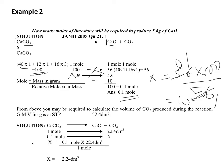Therefore, 0.1 mole of limestone will give how many volumes of carbon dioxide? Let the volume of CO2 be X. When you cross-multiply to find X, X is equal to 0.1 mole times 22.4 dm³, all over 1 mole. The unit mole cancels, and you are left with 0.1 times 22.4 dm³, which is equal to 2.24 dm³. So X, the volume of CO2 produced by 0.1 mole of CaCO3, is 2.24 dm³.